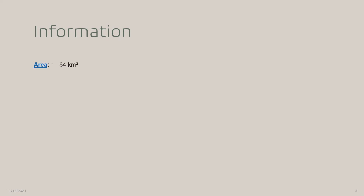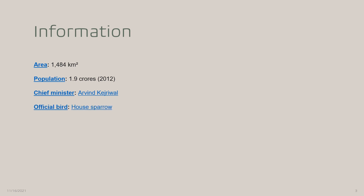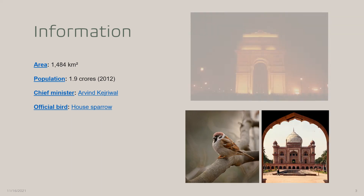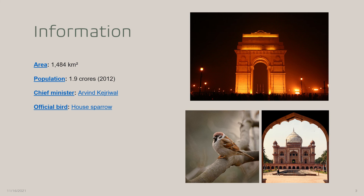Now for some extra information: the area of Delhi is 1,484 square kilometers. The population according to 2012 is 1.9 crores. The Chief Minister is Arvind Kejriwal. The official bird is the house sparrow. And this is our famous India Gate.